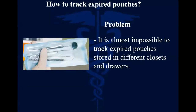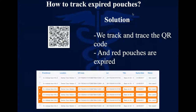When you want to track the validity of all your pouches, it's almost impossible to read them all manually in every drawer and closet. You need something stored in a program. With the program, you just click, read the QR code, and see the series of pouches. When a pouch is expired, its background will turn red by default — making it very easy to find expired pouches and re-sterilize them.